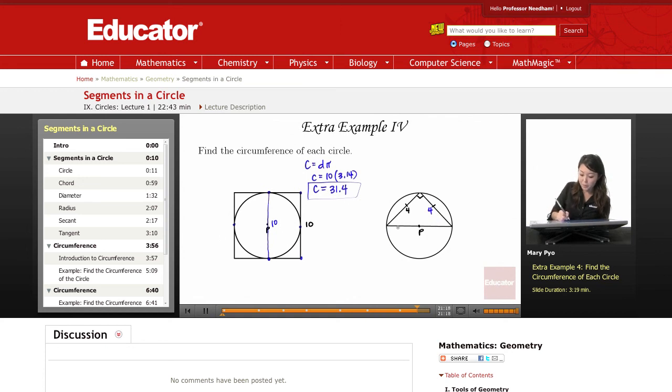So I'm going to use the Pythagorean theorem to look for this measure. C squared equals 4 squared plus 4 squared. C squared equals 16 plus 16, which is 32. Square root of 32 equals 5.66.